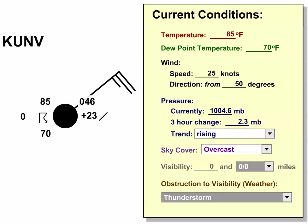We can also tell wind speed from the station model. The speed here is 25 knots, as indicated by the two long wind barbs and the one short wind barb. Each long wind barb represents 10 knots, and the short wind barb represents 5 knots. So we sum those together and get a total of 25 knots.